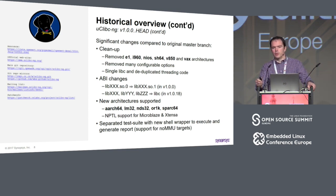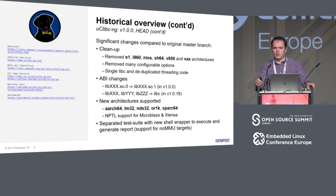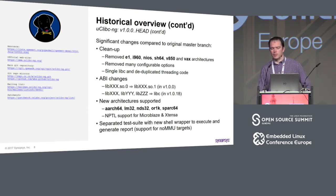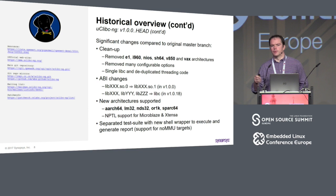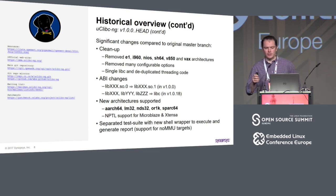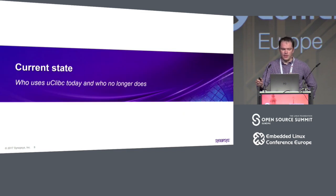Some options that were removed: large file system support is now enabled by default, because it did not contribute much to reducing library size but was a nightmare to manage - every time you didn't have it, you needed to rebuild. Some glibc configuration options were also removed, as well as options related to kernel 2.6 module execution, which is not widely used today.